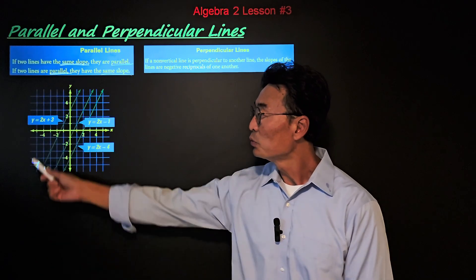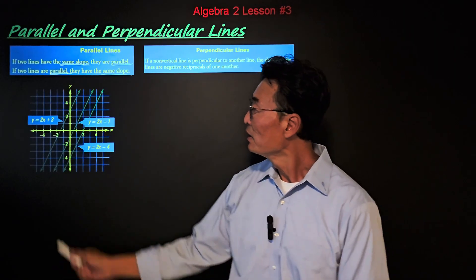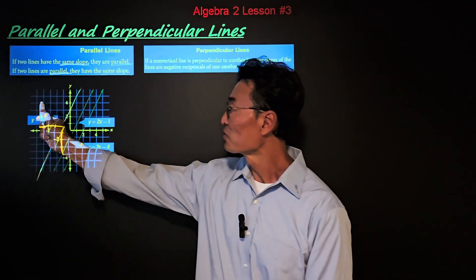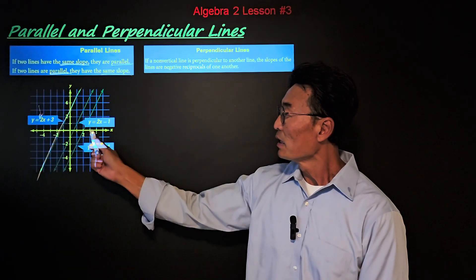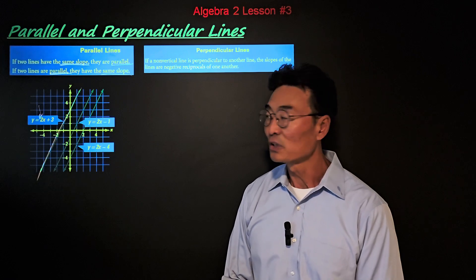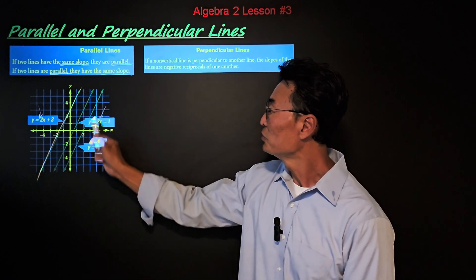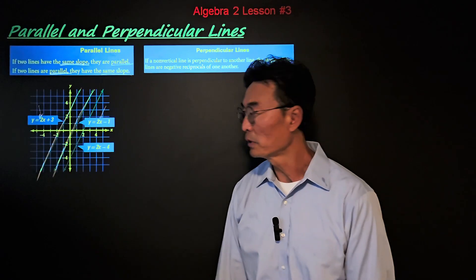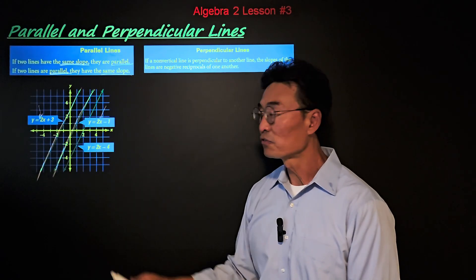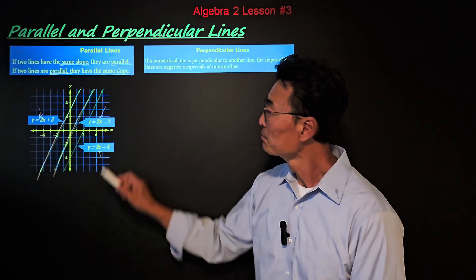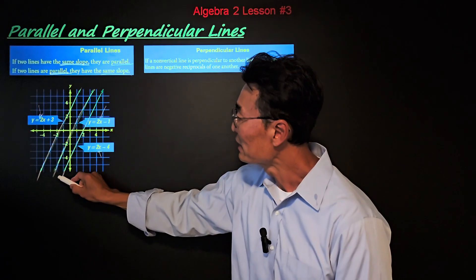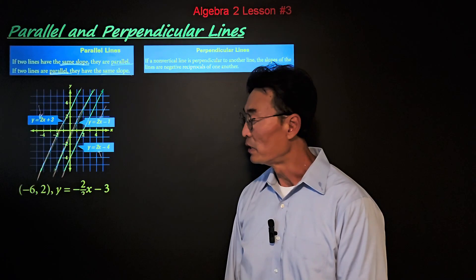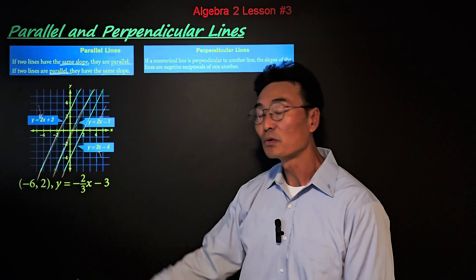Given the equation y equals 2x plus 3, if you graph it the line will look like that — notice the slope is 2. If you have y equals 2x minus 1, the slope is also 2, so if you draw that line they are going to be parallel to each other. A third one, y equals 2x minus 4, once again the slope is 2, therefore that line will be parallel to the other two lines as well.